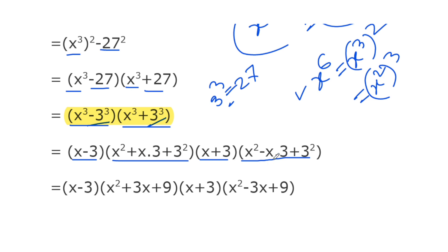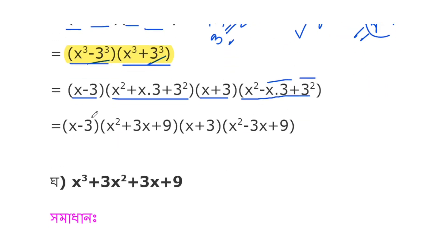So the complete factorization is (x-3)(x²+x+3²)(x+3)(x²-x+3²), which simplifies to the final answer.